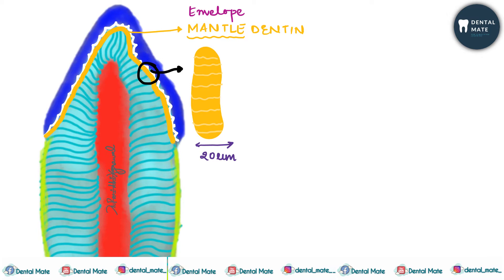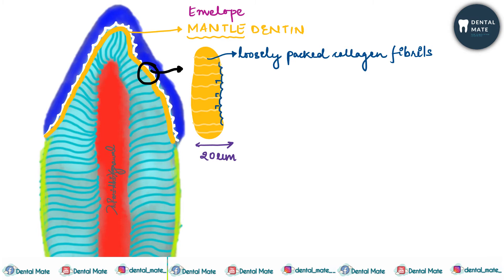Regarding the function of mantle dentine: it basically lacks phosphorylation and has loosely packed collagen fibrils. It is less mineralized as compared to the remaining dentine, so it is soft. Because it is soft and less mineralized, it provides a cushioning effect to the tooth. To summarize: mantle dentine envelops the remaining dentine, has loosely packed collagen fibrils, lacks phosphorylation, is soft, and provides a cushioning effect.